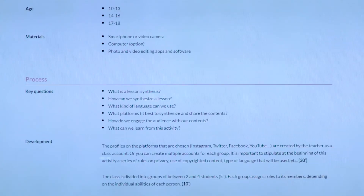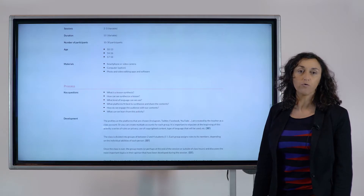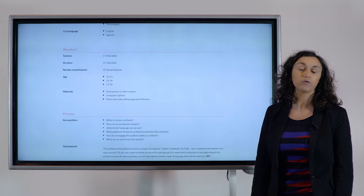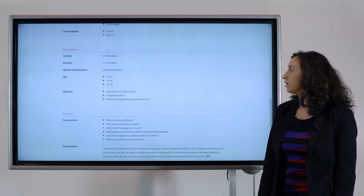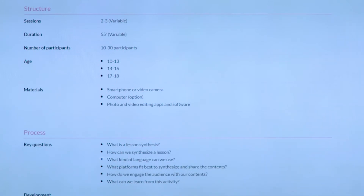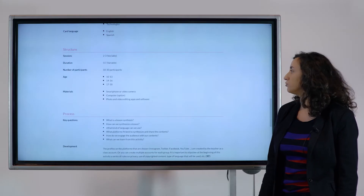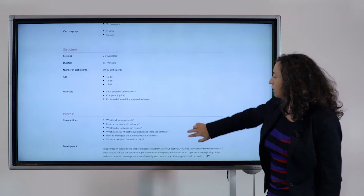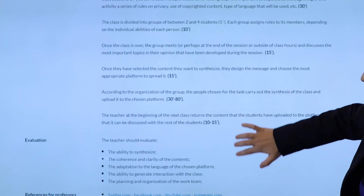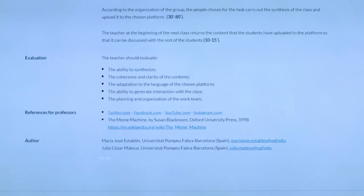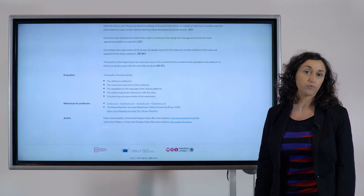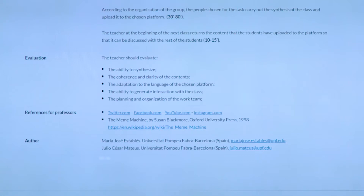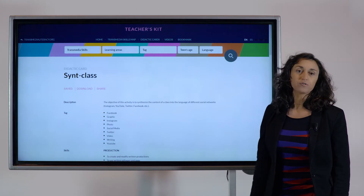The field 'key questions' provides some learning issues you can address with your students through this activity. In the card you also find concrete information about how to organize the activity in the classroom. In the field 'materials' you find information about what you need to work with students. The 'duration' gives you an estimated time to carry on the activity in the classroom. You also have the field 'evaluation' with several assessment criteria for evaluating the activity with your students, and the 'references' which are sources you can use to go in depth and learn more about the activity.